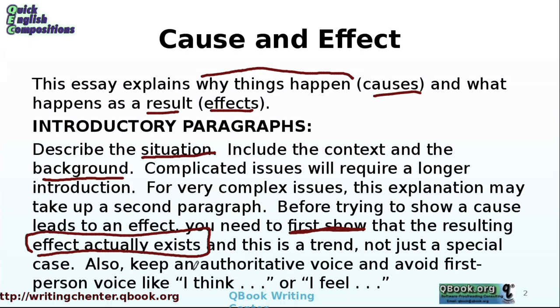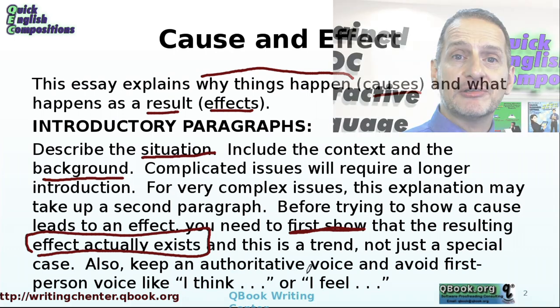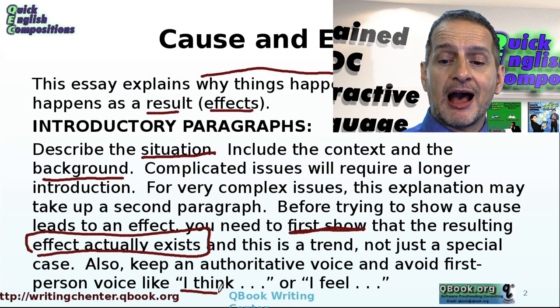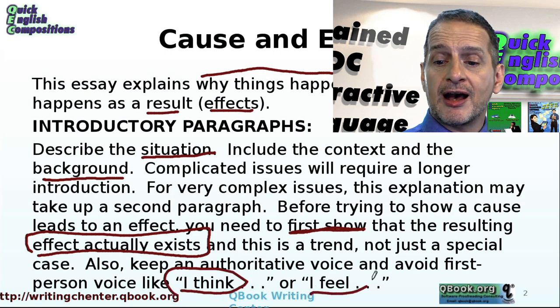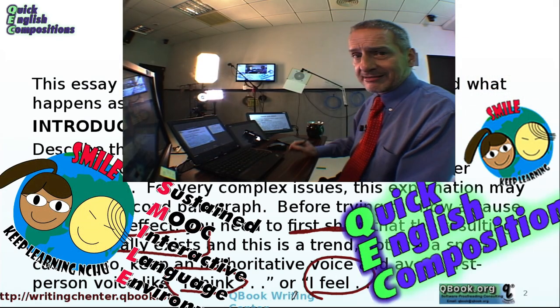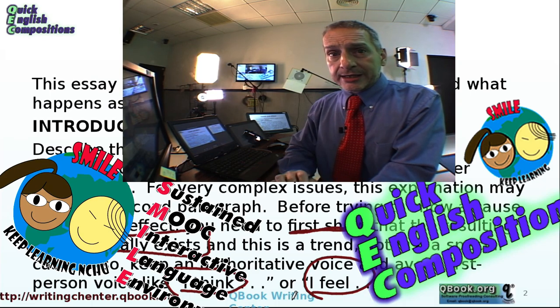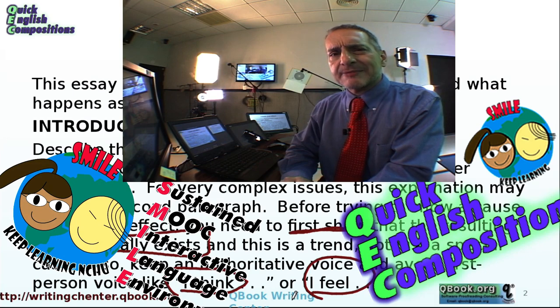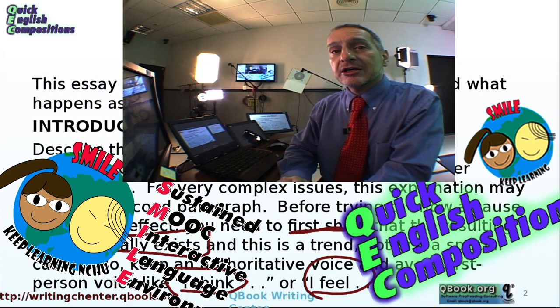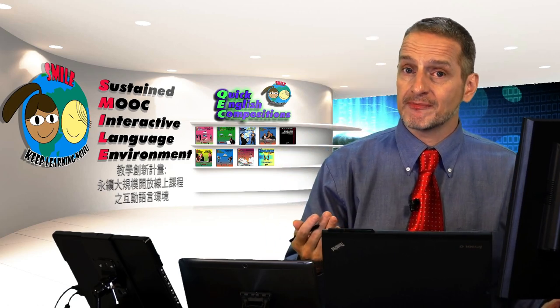Something you need to be careful about is that you need to be authoritative, which means you need to speak very clearly as if you're an expert and really confident. You want to avoid words like 'I think' or 'I feel' — those are terrible words to use in an essay like this. Try to avoid saying things like 'maybe,' 'should be,' 'could be,' 'kind of.' Those kinds of things may be okay in English conversation, but in writing you need to be much more forceful and clear.